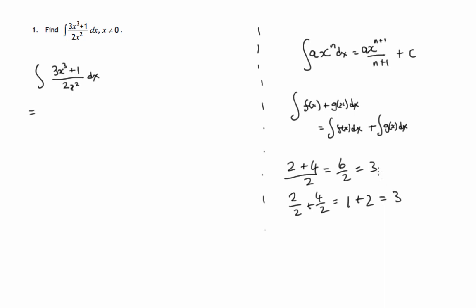So we're allowed to split a fraction like this into the sum of two fractions like this. That's what we'll do here. So we're integrating the 3x cubed has to be divided by the 2x squared, and the 1 has to be divided by the 2x squared.